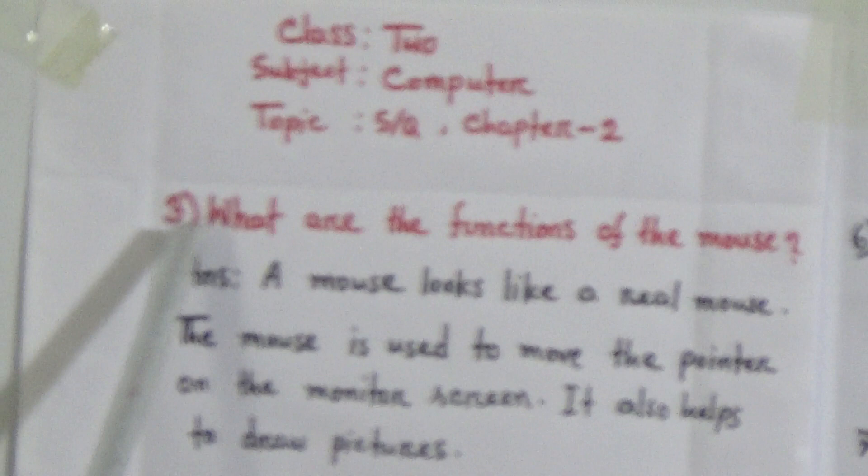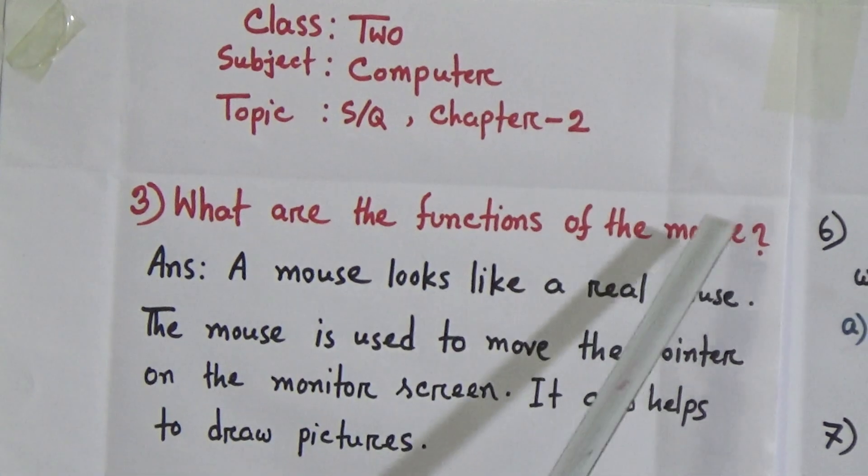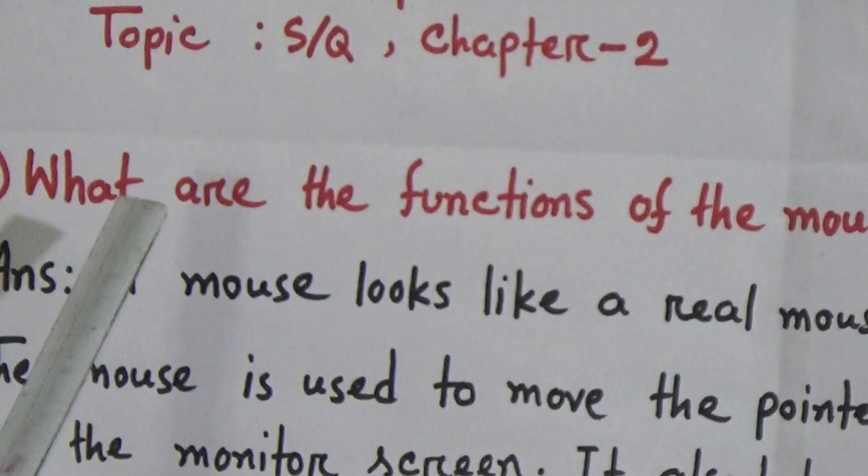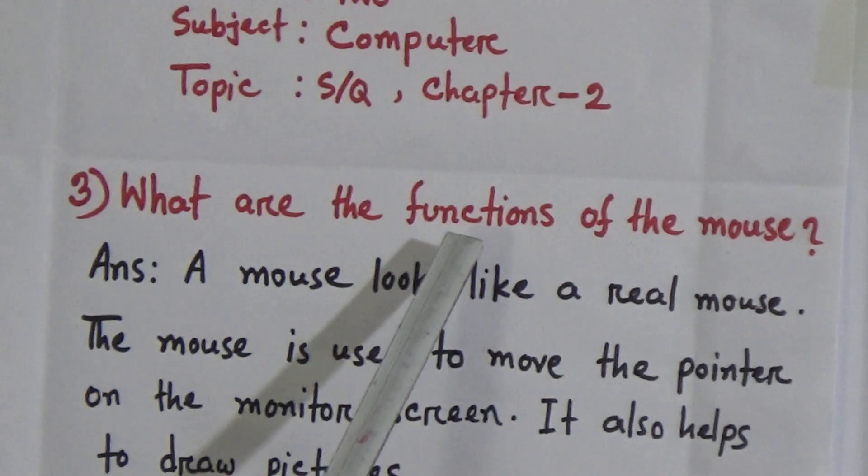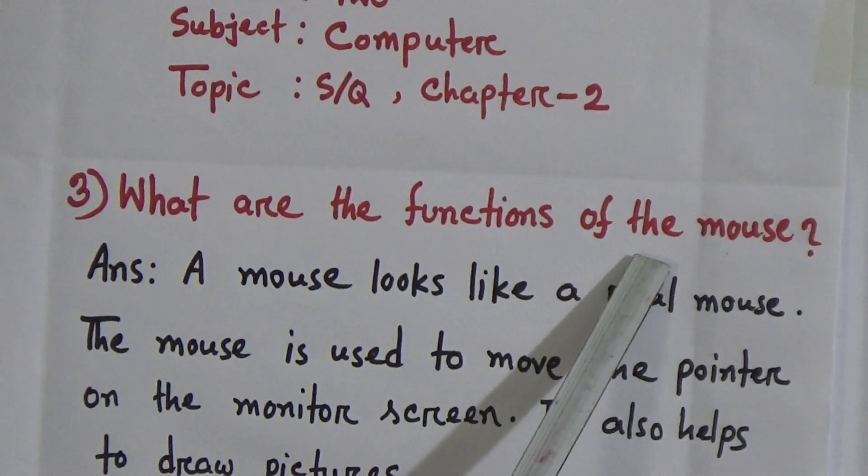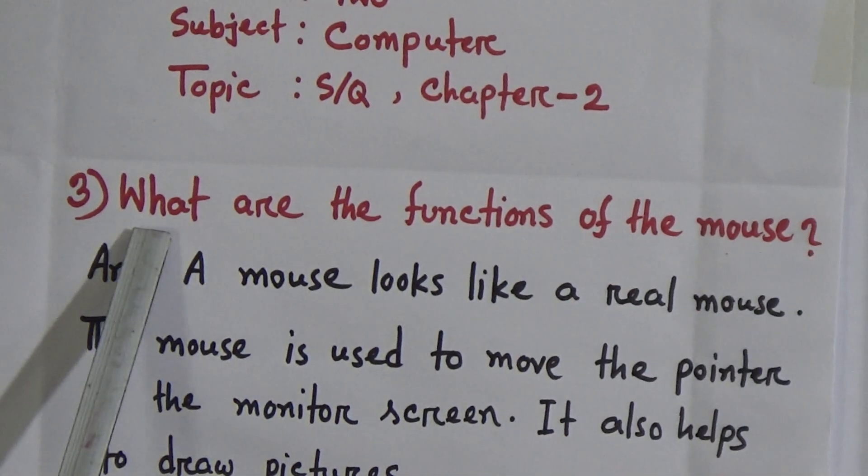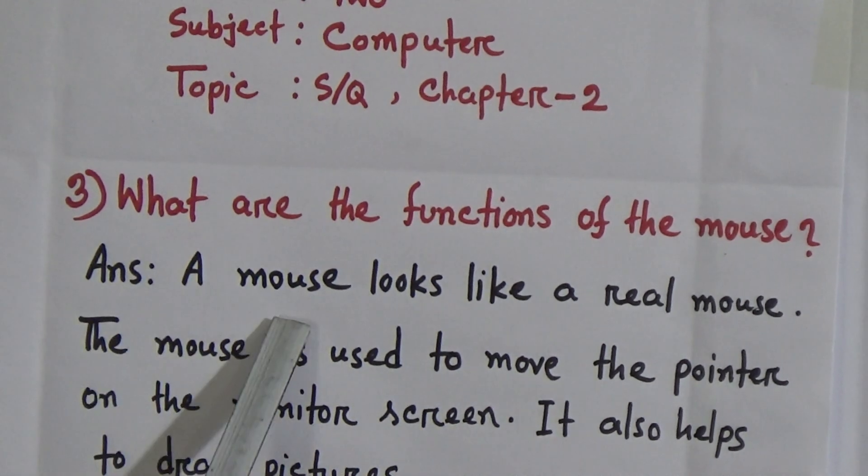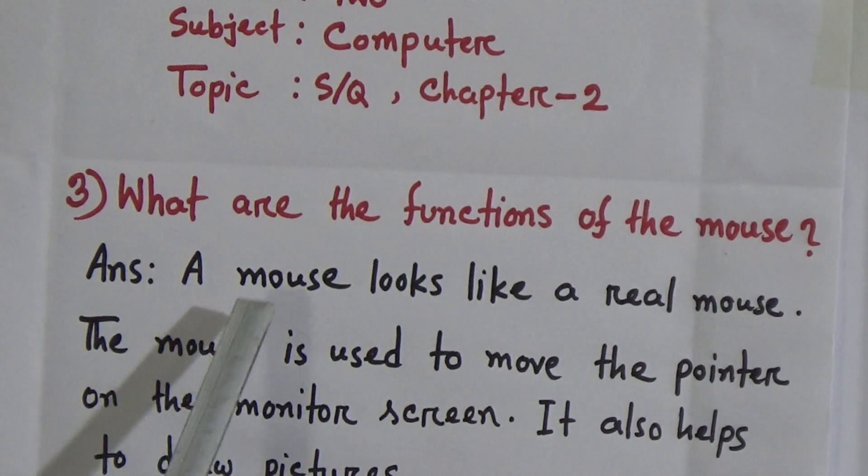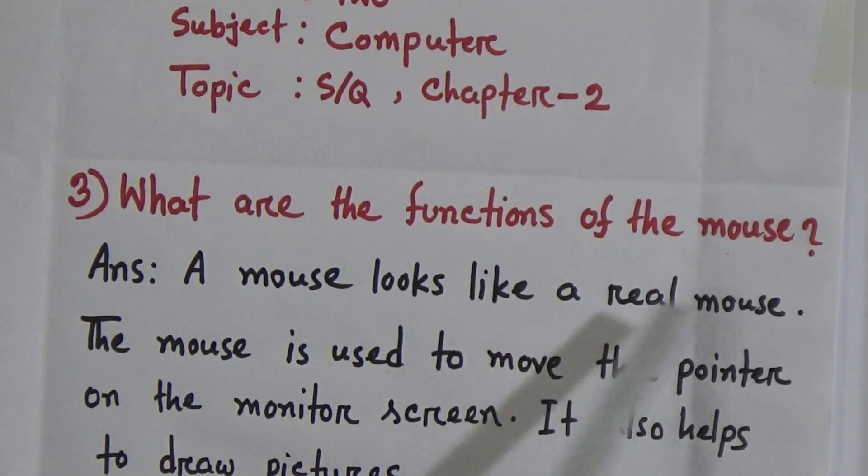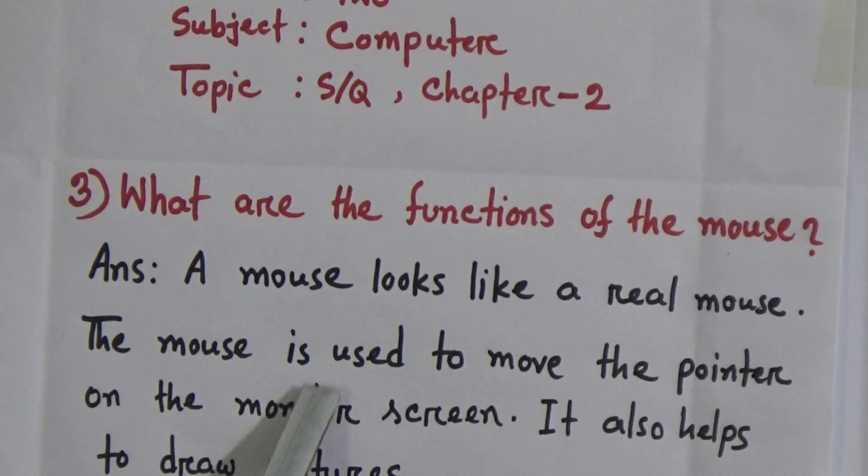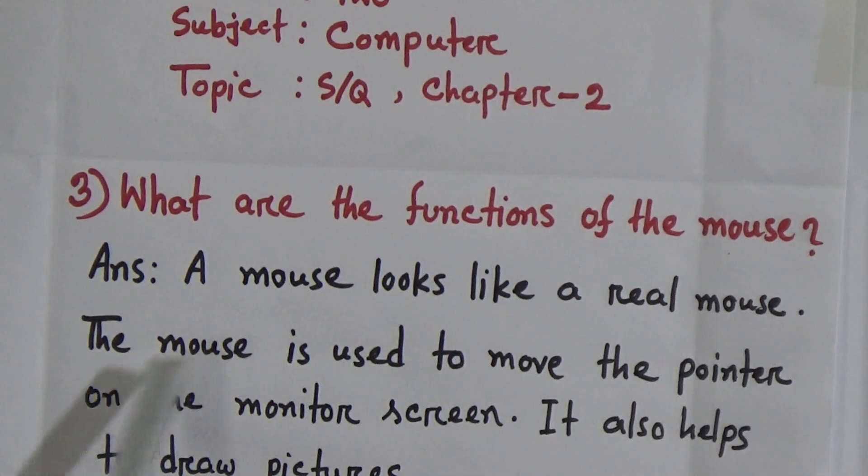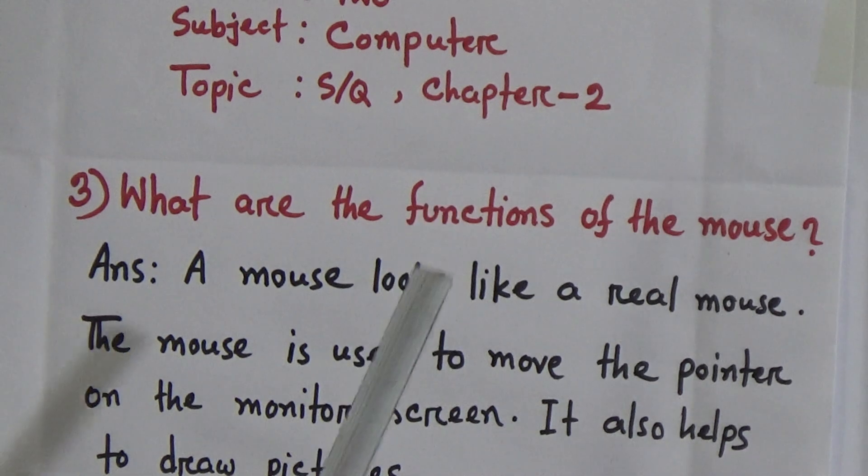Student, number 3. What are the functions of the mouse? That means, how can the mouse operate their work? The answer of this question is: A mouse looks like a real mouse. The mouse is used to move the pointer on the monitor screen. It also helps to draw pictures.